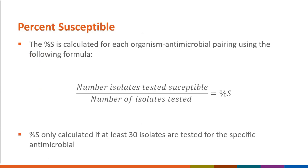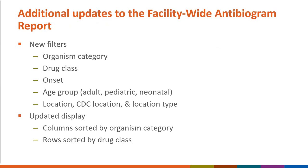The report now shows percent susceptible rather than percent non-susceptible. The percent susceptible is a calculation made for each organism-antimicrobial pairing: simply the total number of isolates that tested susceptible divided by the total number of isolates tested. The percent susceptible will only be calculated if at least 30 isolates are tested for that specific antimicrobial. These updates to the report were based on feedback from NHSN users and antimicrobial resistance subject matter experts.